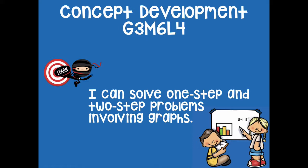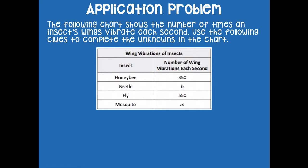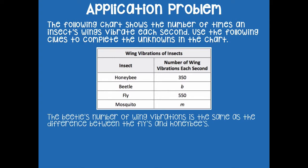Make sure you have your lesson template for today because you're going to need that to make your graph. First, we're going to start with our application problem. The following chart shows the number of times an insect's wings vibrate each second. We're going to use the following clues to compare the unknowns in the chart. A honeybee has 350 wing vibrations each second. A beetle's value is unknown, and a fly has 550. A mosquito's value is unknown as well.